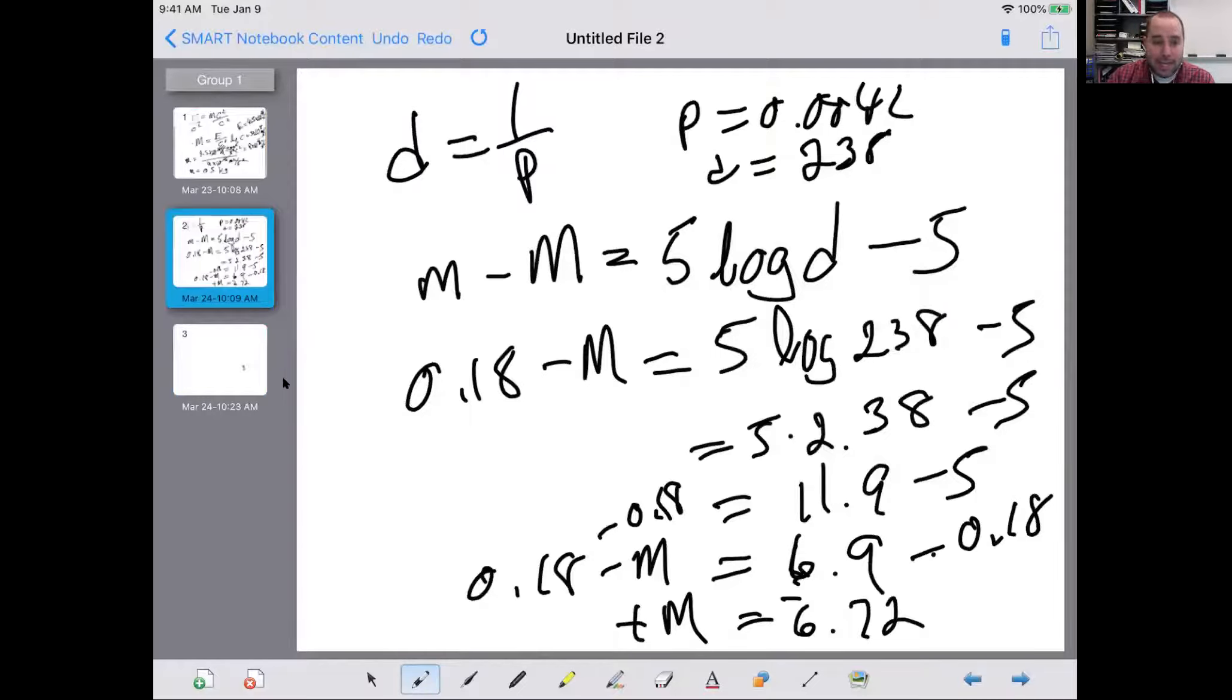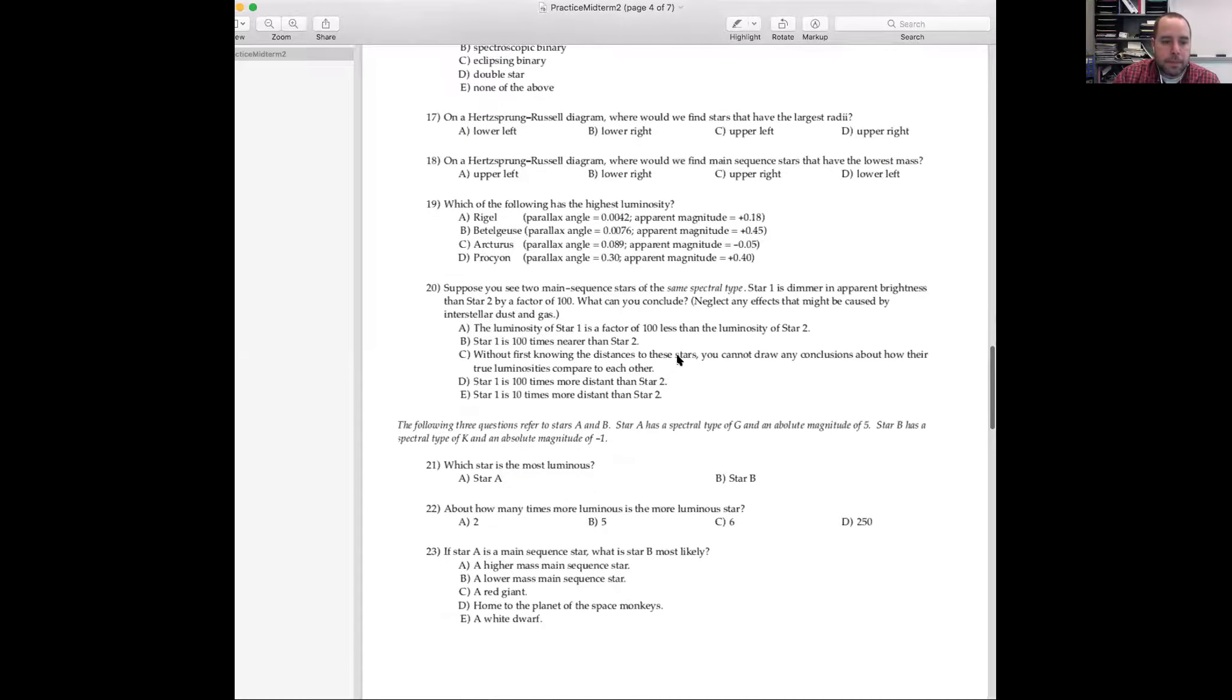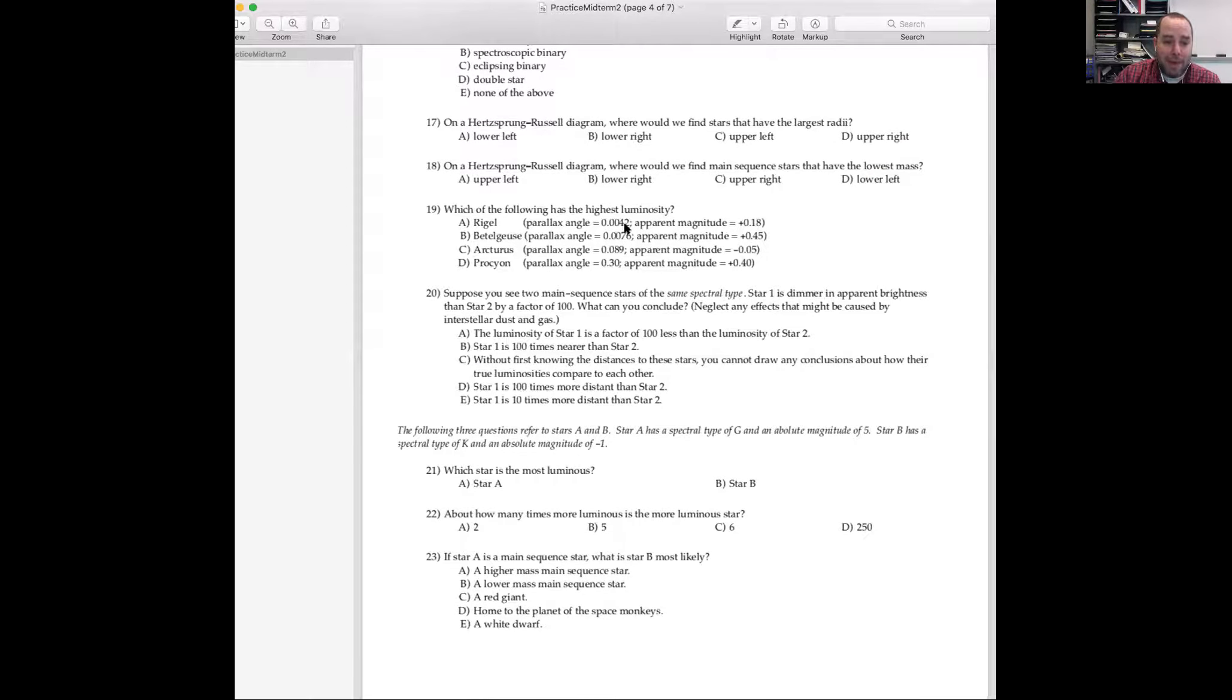Certainly larger than Procyon, which is fainter than it, certainly larger than Betelgeuse, which is fainter than it and further away, and probably also more luminous than Arcturus. So again, if you understand how this stuff works, you will know, you can see that you don't really have to do all of them.